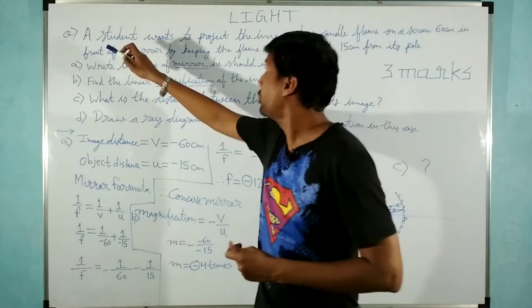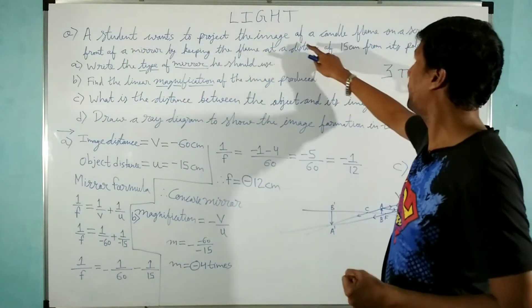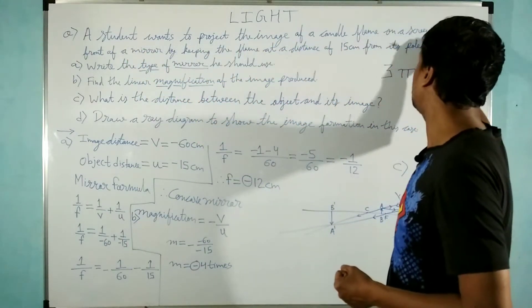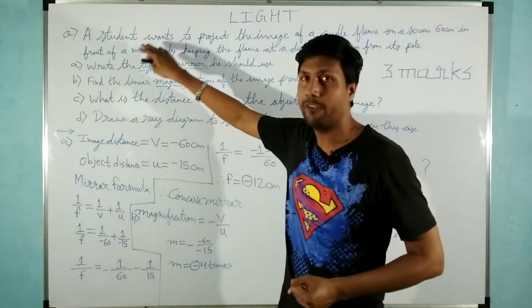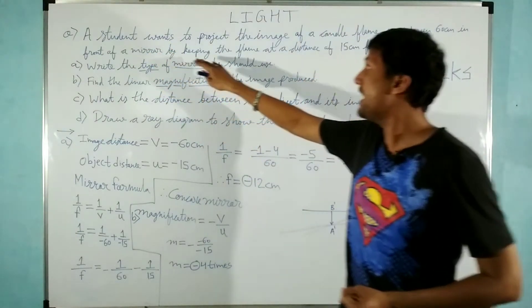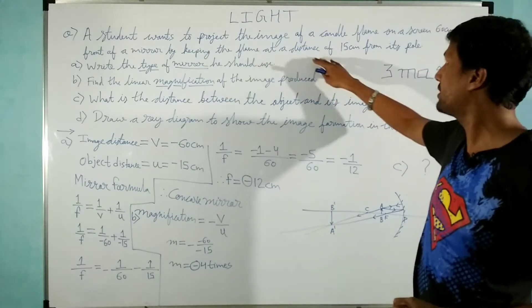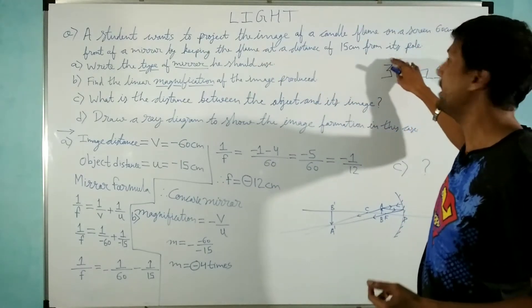Let's see what the question is. A student wants to project the image of a candle flame on a screen 60 centimeter in front of a mirror by keeping the flame at a distance of 15 centimeters from its pole.